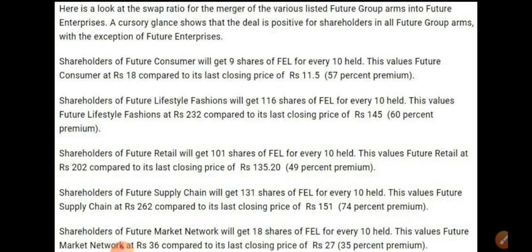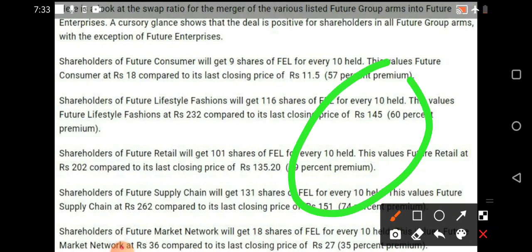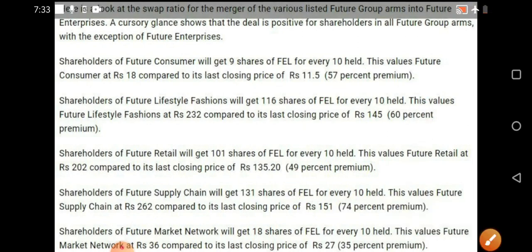For Future Retail, you will get almost 101 shares of FEL for every 10 shares held. For Future Supply Chain, you will get 131 shares of FEL for every 10 shares held. For Future Market Network, you will get 18 shares of FEL for every 10 shares held. The respective premiums are shown here, and the major premium is given to Future Supply Chain, as discussed in earlier videos.